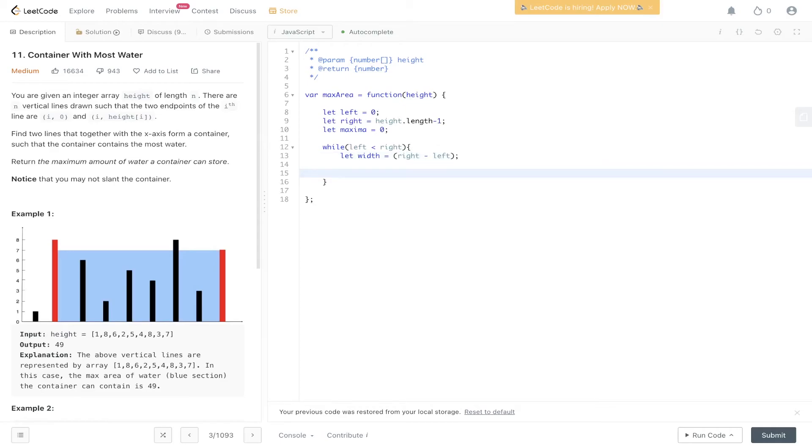Then max area is equal to Math.min, and it's the minimum between the height on the left and the height on the right, timesed by the width. Then we can update maxima passing in the maxima, so the current max and the max area that was just calculated.